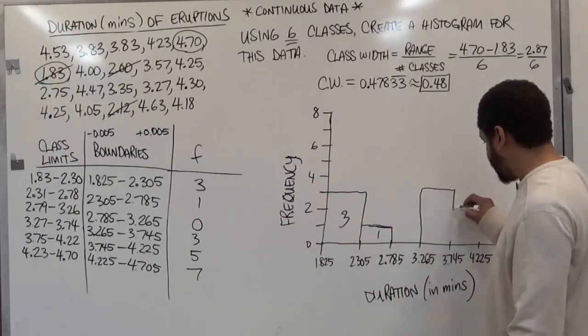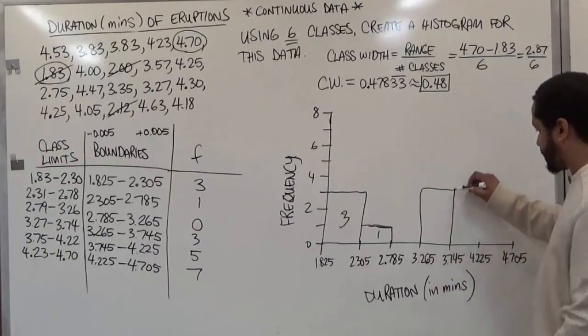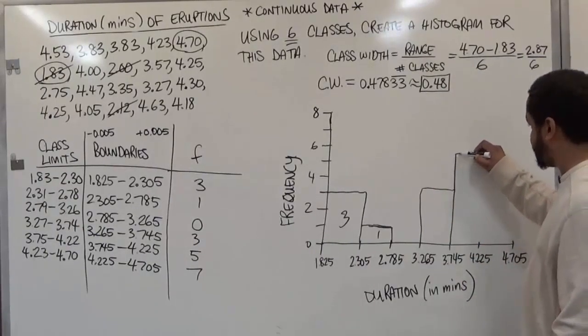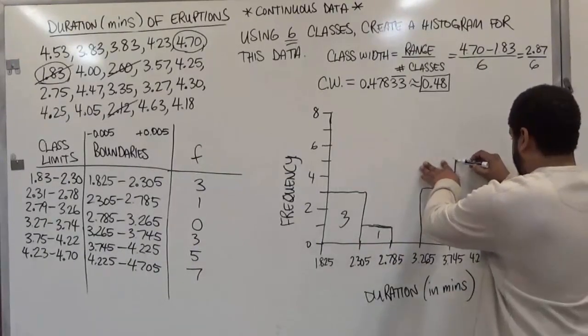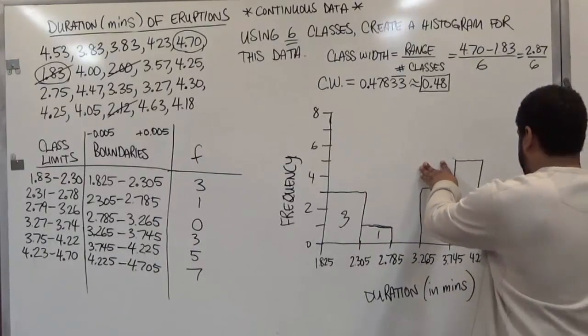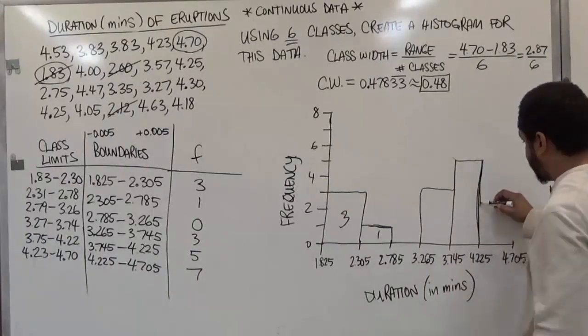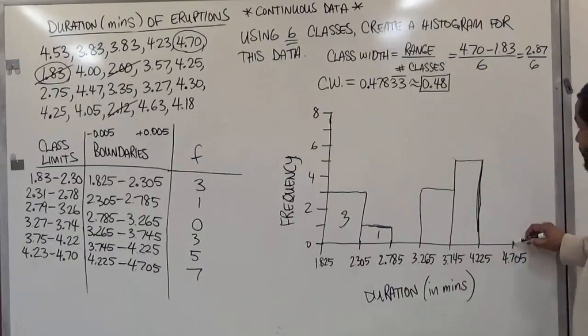So we'll go up to 3 and box this in. The next one has a frequency of 5. Go up 2 more. Might have gone a little too high. If you want to do this extra neat, you can also use a ruler.